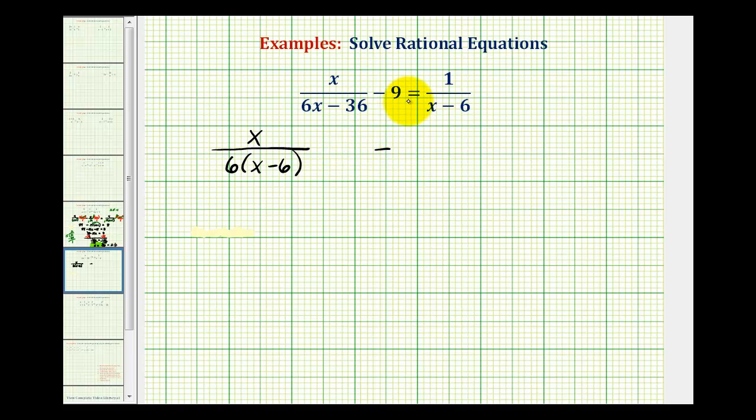And then for minus nine, I'm going to write minus nine over one so everything is in fraction form. And then for the right side, the quantity x minus six doesn't factor, so we'll leave it as one divided by the quantity x minus six.